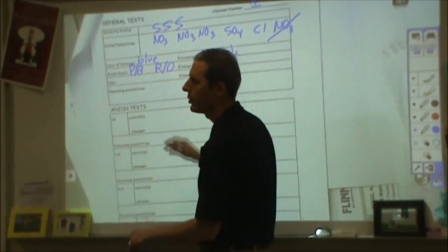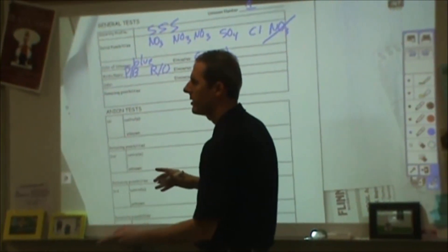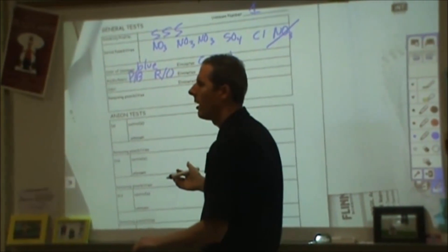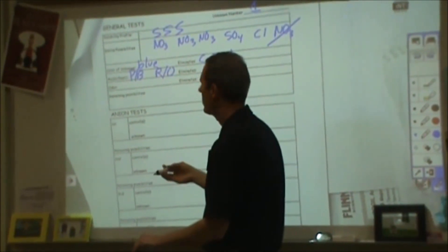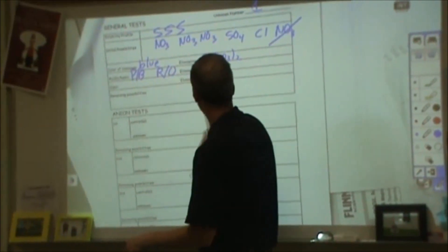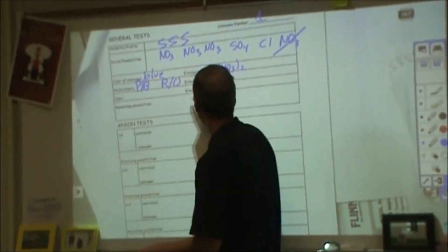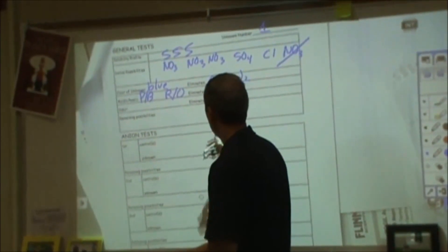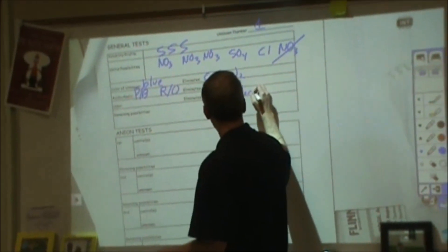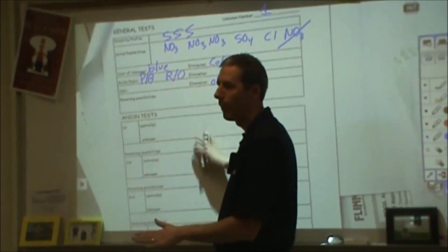NH₄OH — I'm not sure off the top of my head which ones they fit into. I think acetic acid and NH₄OH might be in the same solubility. But sodium sulfide is in a completely different solubility. So if you have the sodium sulfide smell, that would eliminate anything. If you have the cleaner smell, that would eliminate the acetic acid. You're only going to eliminate other things that smell.